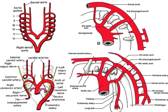Intersegmental arteries anastomose with one another. In the cervical region, many will degenerate, but one will persist and enlarge to become a subclavian artery, while the anastomotic segments become the vertebral artery. The sixth aortic arch is becoming a pulmonary artery going to the developing lung. On the left side, it maintains its connection to the dorsal aorta, and that will be the ductus arteriosus.